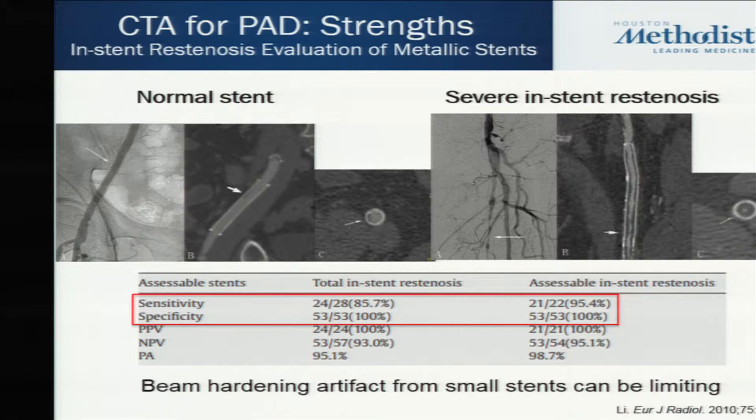Here is an example of two cases — one patient with a normal stent and another with in-stent restenosis. Data evaluating CT's sensitivity and specificity for stent assessment shows almost unbelievably accurate numbers for diagnosing disease within stents. So with metal, especially stents, it is not a problem with CT.